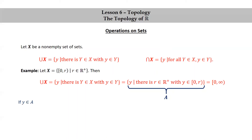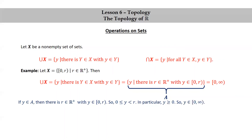I'm going to call that set A. To show A equals the interval 0 to infinity, we show each is a subset of the other. First, if y is in A, then there is a positive real number R with y in 0 to R, meaning y is between 0 and R, possibly including 0 but not R. In particular, zero is less than or equal to y, which means y is greater than or equal to 0, so y is in the infinite closed interval 0 to infinity. Since y in A was arbitrary, A is a subset of 0 to infinity.